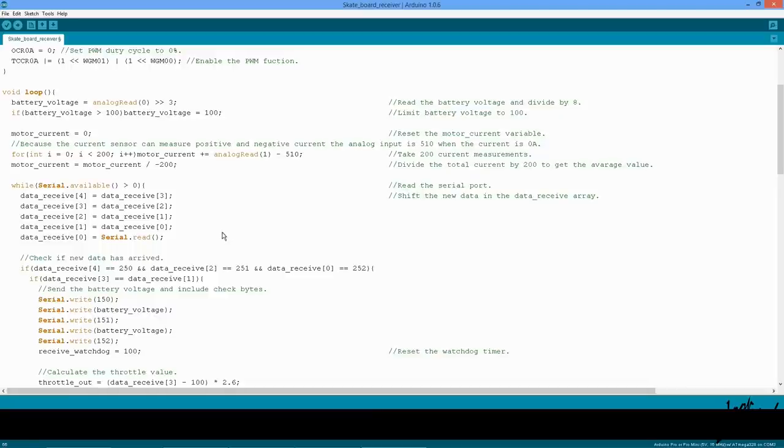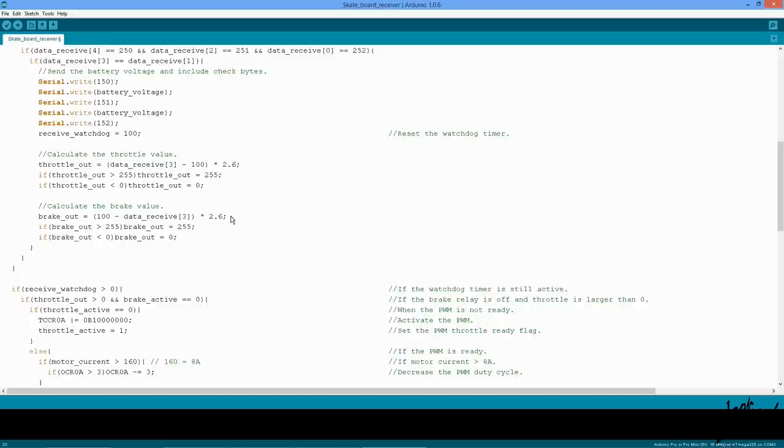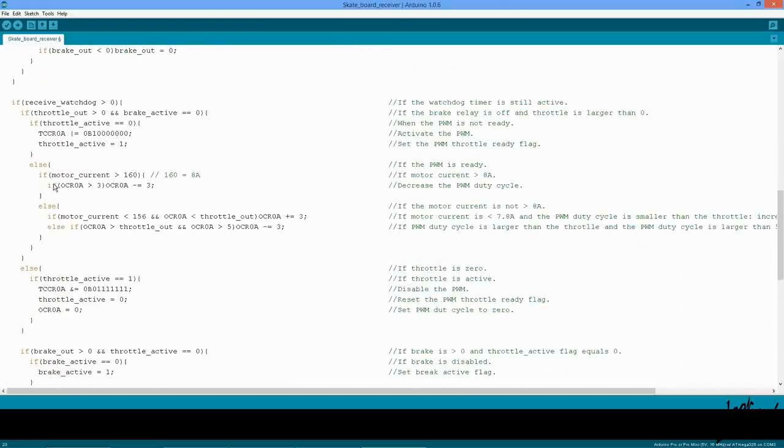I added a current sensor to measure the average current through the motor windings. In the software, 200 current measurements are taken every loop to calculate the average current at that moment in time. If the average current is too high, the software will automatically lower the duty cycle of the pulse width modulator until the current is low enough to continue.